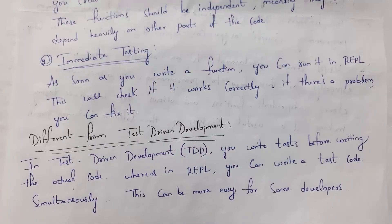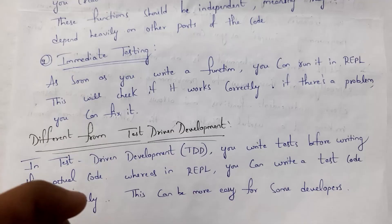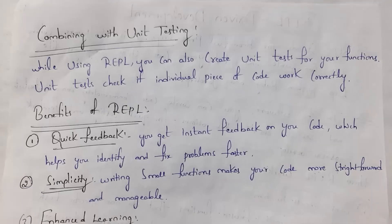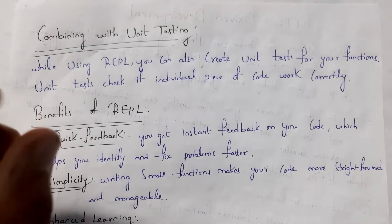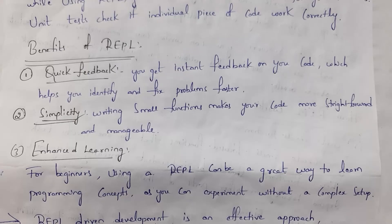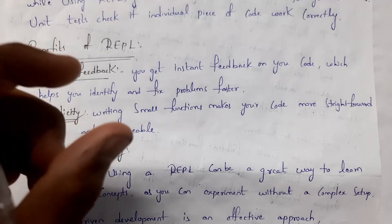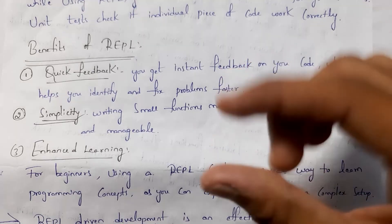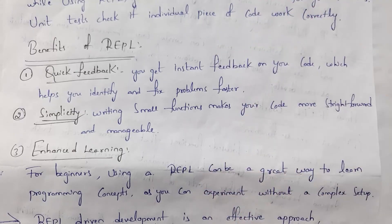REPL is completely different from test-driven development. In TDD, you first write testing code and then create the software. But in REPL, you write test code simultaneously — you develop some part of code by creating an independent function and then perform testing on it. This method is very easy for developers, and you can also combine REPL with unit testing, meaning you perform unit tests for each independent function to check whether that part of code is working correctly. The first benefit is quick feedback: whenever you develop a function, you can immediately test and see feedback. The second benefit is simplicity: since you are not developing complete software at once, and are only working on independent functions, testing is much easier.